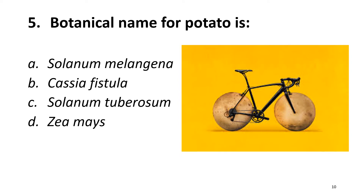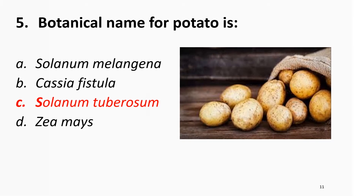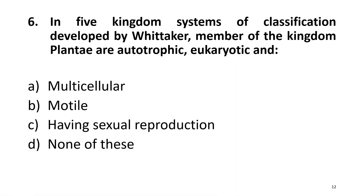Question 5: The botanical name for potato is Solanum tuberosum. The right answer is Charlie. Question 6: In the five-kingdom system of classification developed by Whittaker, members of the kingdom Plantae are autotrophic, eukaryotic, and multicellular. Alpha is the right answer.